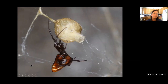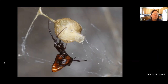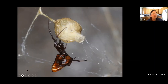Argyrodes pluto are obligate kleptoparasites exclusively in black widow webs, while Neospintharus are far less specialized — capable of living as solitary spider hunters in Philippinella webs, as kleptoparasites in Theridion webs, or in black widow webs. The Argyrodes pluto showed no leg loss in webs lacking Neospintharus — strong circumstantial evidence that Neospintharus were competing directly and aggressively with Argyrodes.